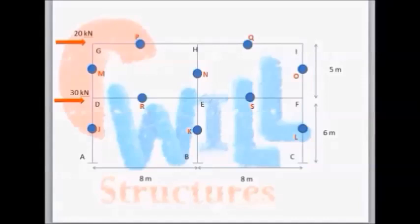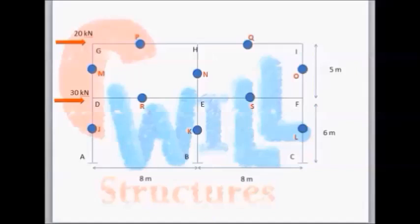As per our first assumption, we assume hinges are generated at the mid-level of each and every element. In the diagram, I have already assumed all hinges at the middle height and mid-level of each element and assigned names to each hinge: P, Q, M, N, O, R, S, J, K, L. Where hinges are generated, the bending moment will be zero. For the top story, we cut from the hinge level at the M-N-O line.